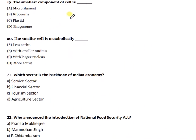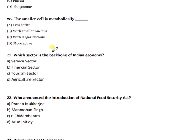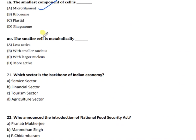Question 19: The smallest component of a cell is which of the following? The right answer is microfilament. Question 20: The smaller a cell, the metabolically it is which of the following? The right answer is more active.